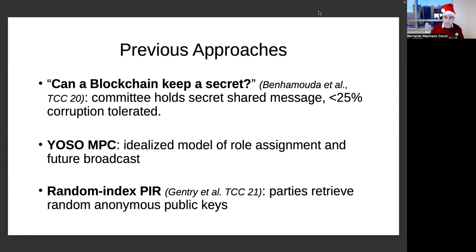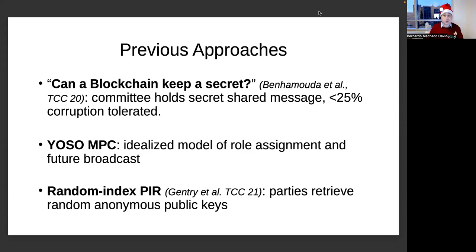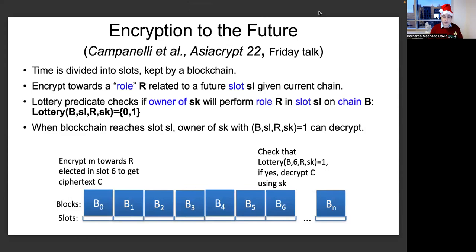Finally, the same authors of YOSO MPC proposed the idea of a random index PIR — a private information retrieval protocol where parties are able to retrieve some data from a random index without revealing that to the servers. They use that plus techniques like MPC in the hat to retrieve random public keys associated to a random identity, so they can encrypt data towards someone whose actual identity they don't know. The problem we're trying to address is how to construct an efficient channel from one committee in YOSO MPC to the next, while also achieving a publicly verifiable secret sharing scheme compatible with these efficient secure channels.